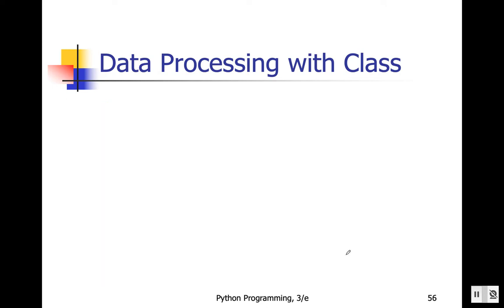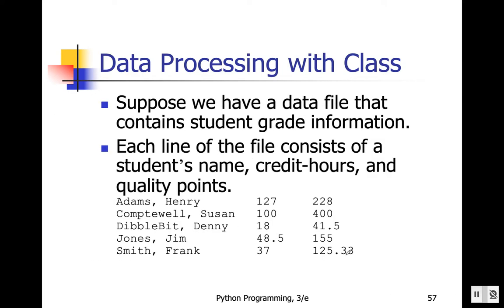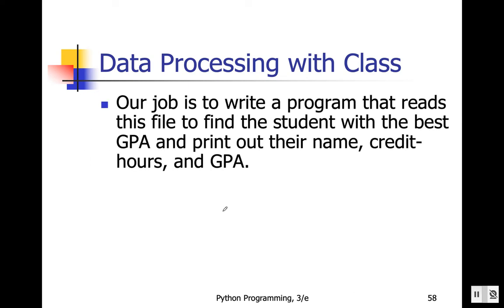Everything will be in a file, and the file will look like this — each line will have the student name, credit hours, and quality points. A typical university measures grading using credit hours and total quality points. We are going to find the GPA by dividing the quality points by the credit hours for each student. Our job is to write a program that will read the file, find the student with the best GPA, and print out their name, credit hours, and GPA.